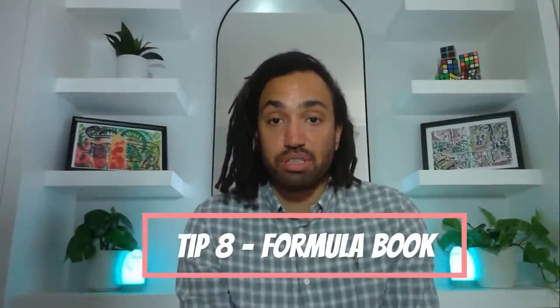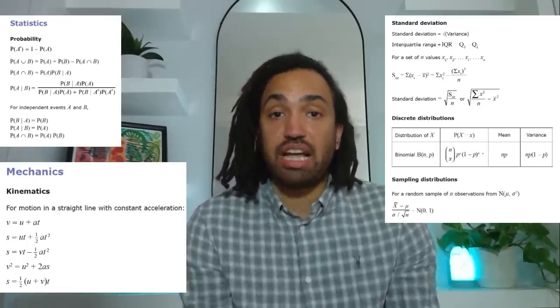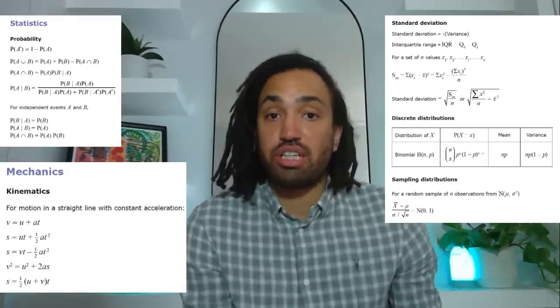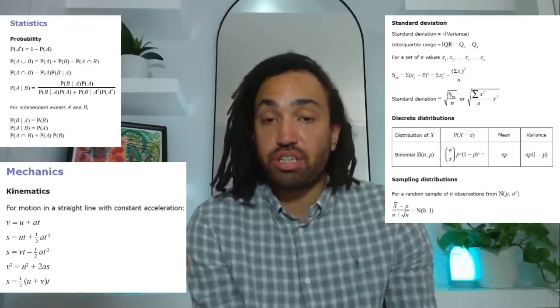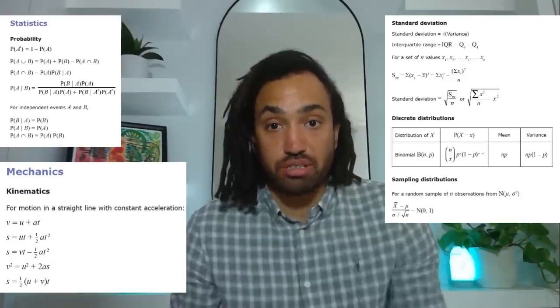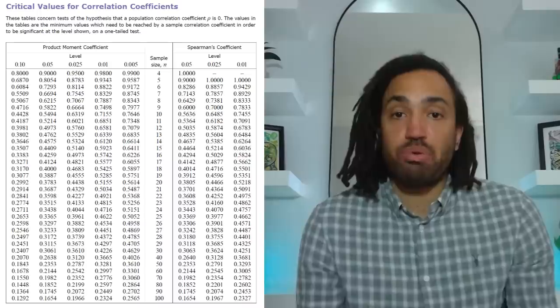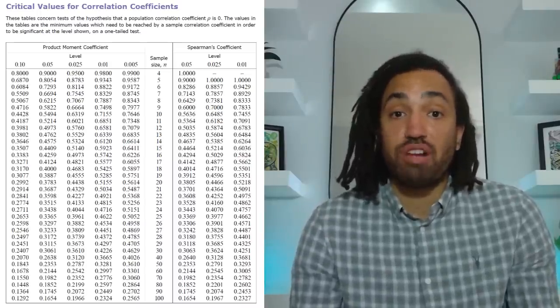Tip number eight and that is formula book page numbers. Make sure you know them. For Edexcel there are only three which you need to know. Page seven and page eight which I've got on the screen now and these show the probabilities and some of the distributions and the standard deviation and they also show kinematics the Suvat equations. Now page 37 is the statistical table which you will need to do a hypothesis test for correlation.